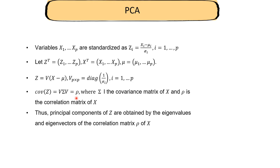Therefore, the principal components of z are obtained from the eigenvalues and eigenvectors of the correlation matrix of x, because the covariance of z turns out to be the correlation matrix of x.